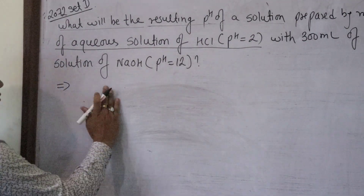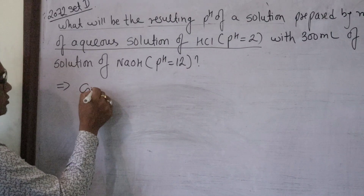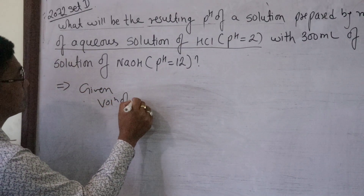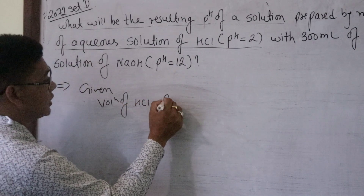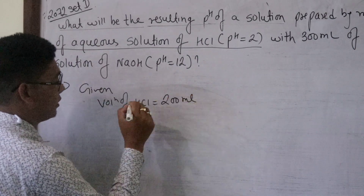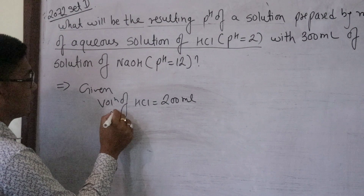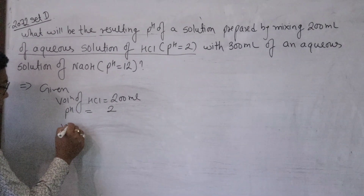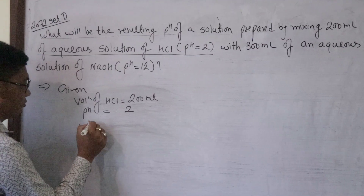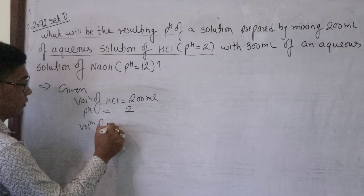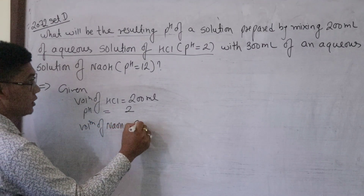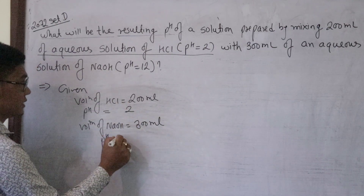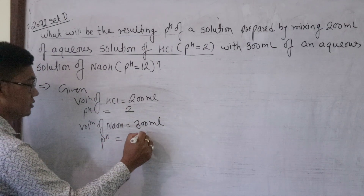I will write the given values. Given: volume of HCl is 200 ml, and the pH value is 2. Volume of NaOH is 300 ml, and the pH value is 12.